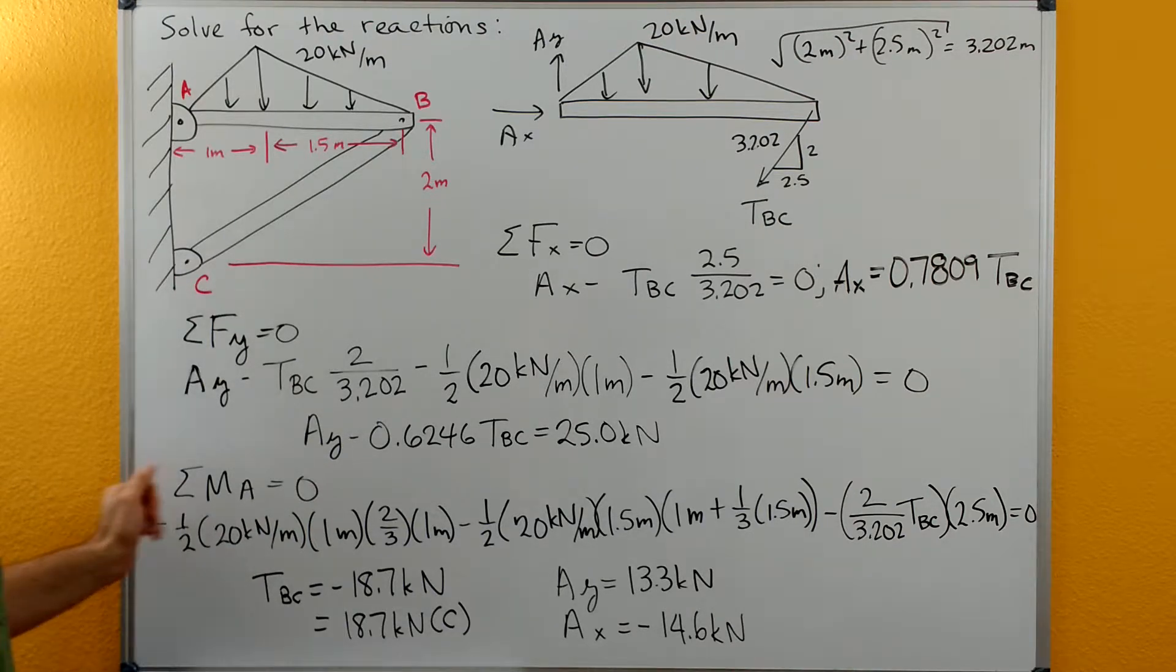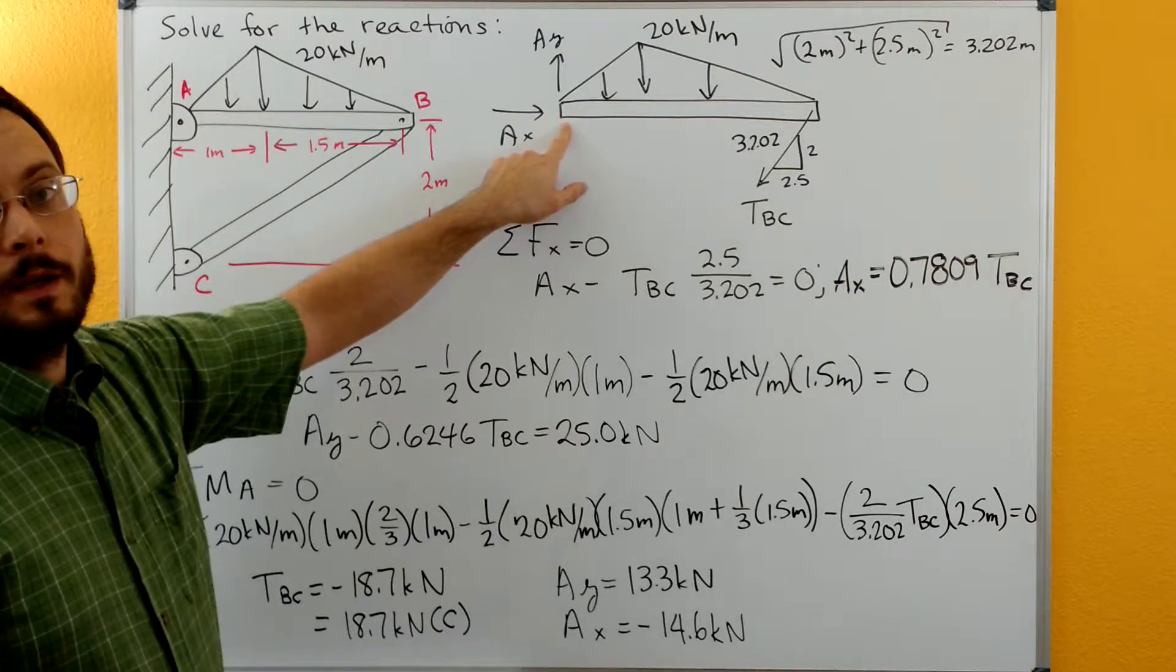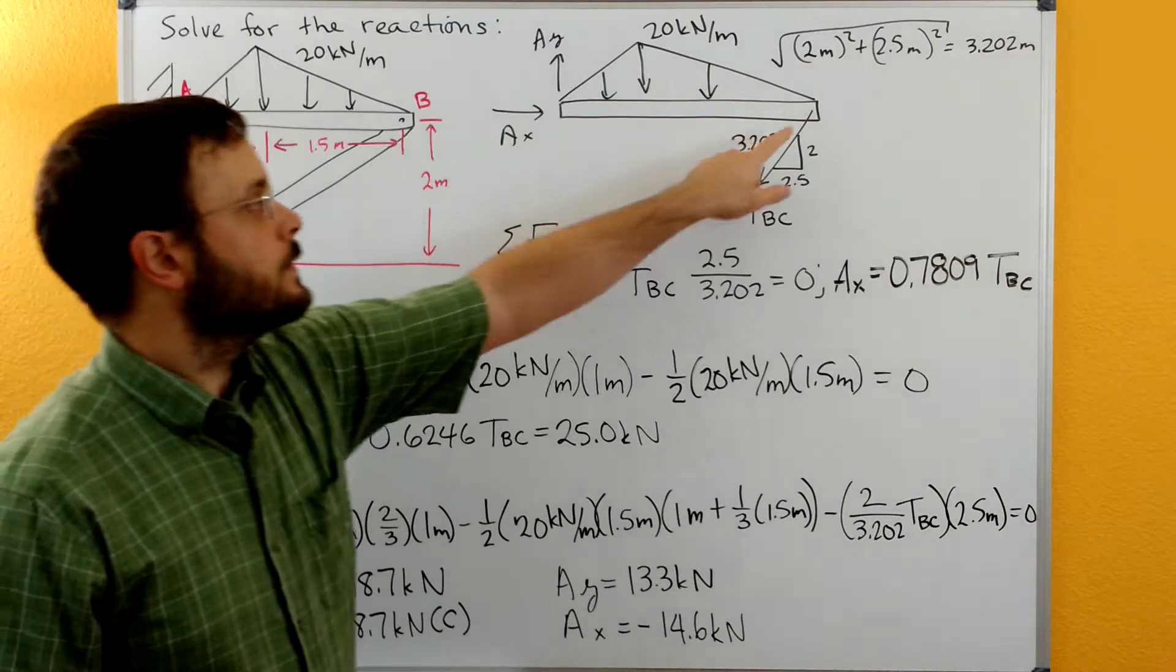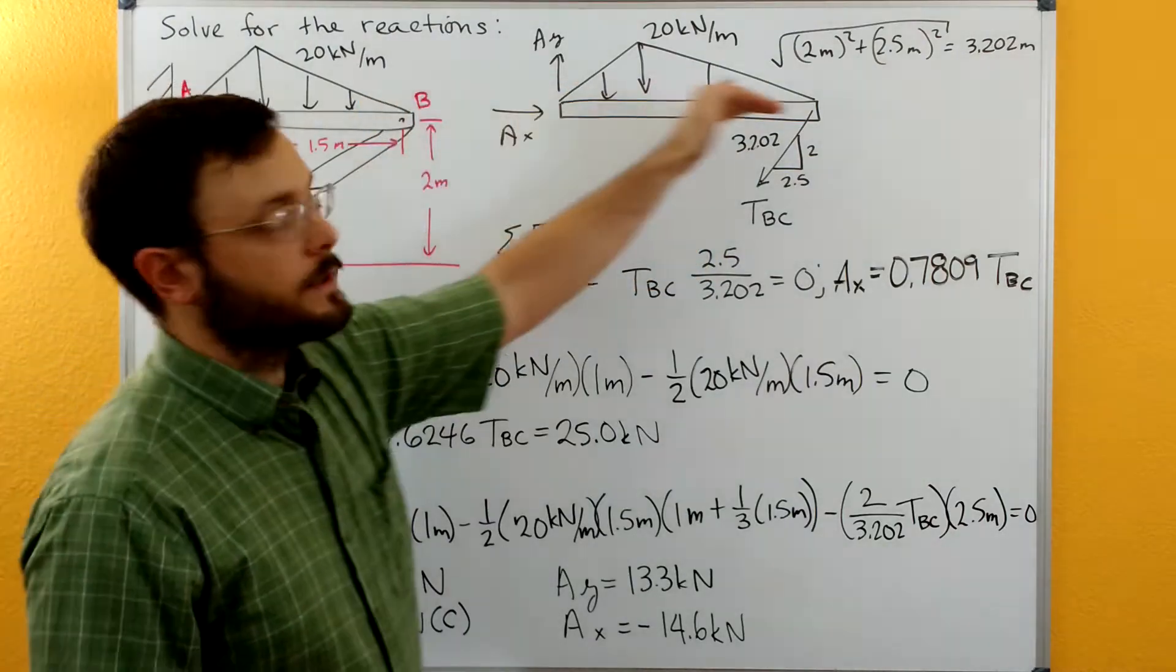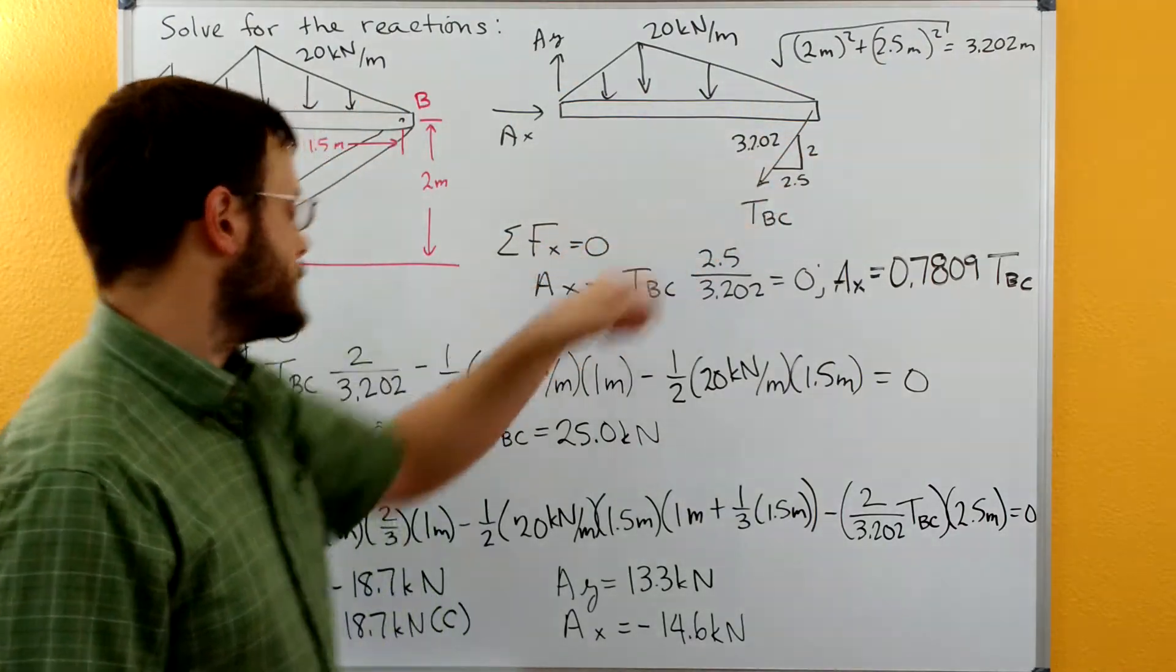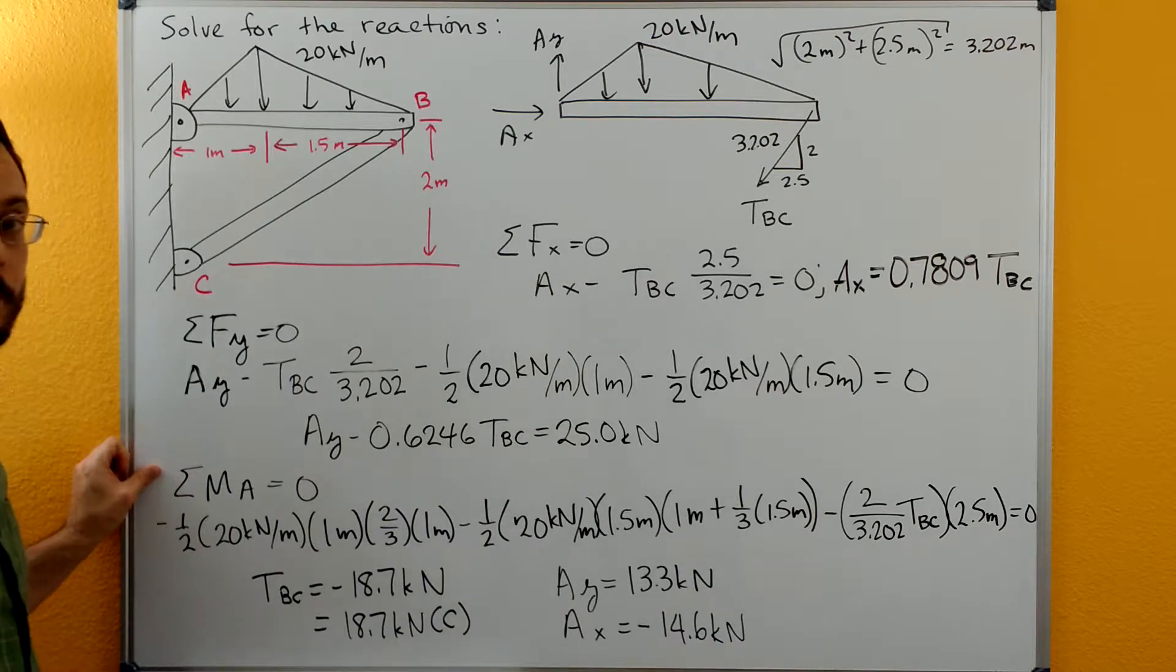We could do sum of the moments either about A to eliminate AX and AY or we could do sum of the moments here about B to eliminate AX since it goes through point B and TBC. I just chose sum of the moments about A.